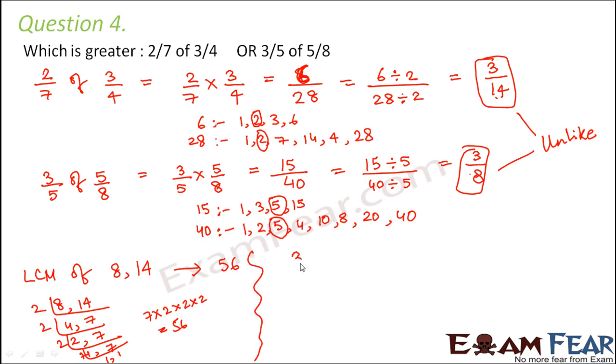So now let us try to convert these two fractions into fractions which have the same denominator. One is 3 by 14, the other is 3 by 8. We multiply the numerator and denominator with the same whole number such that the result has a denominator 56. 14 into 4 is 56, therefore we multiply the numerator also by 4. So we get 12 by 56.